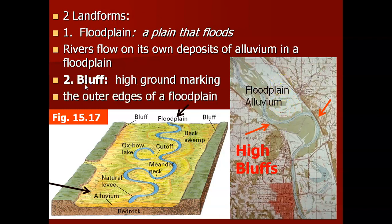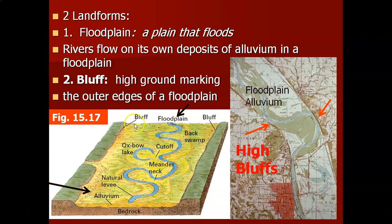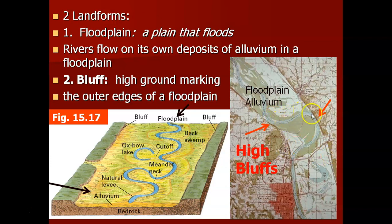The second landform is the bluff — the high ground marking the outer edges of the floodplain. It's always some other geology, not necessarily alluvium — usually bedrock or older sediment unrelated to the current river. The river enlarges its floodplain by meandering and encroaching into the bluff geology. As it cuts into the bluff, it erodes sediment that becomes part of the bed load or suspended load. This topographic map shows the river cutting into the bluff, with lines closely spaced indicating very steep terrain.